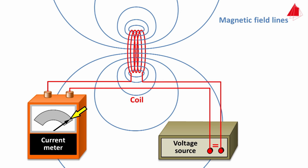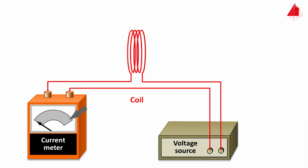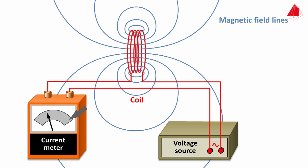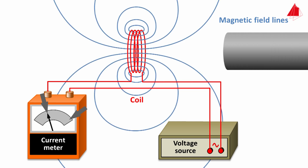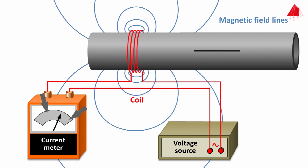If an alternating voltage is applied to the coil, the effective current through the coil is much smaller than when applying direct voltage. The reason for this is the alternating magnetic field, which generates a counter voltage in the coil by self-induction. The counter voltage in turn reduces the current consumption.